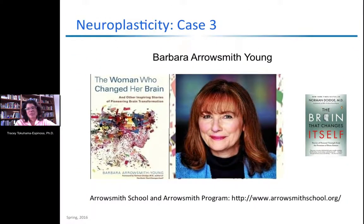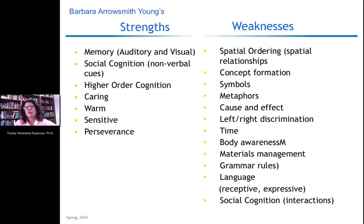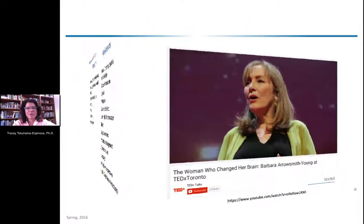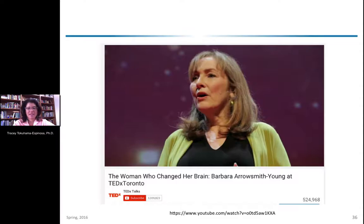In the third case, Barbara Arrowsmith-Young was born with significant learning problems and was told by professionals she would be slow for life. She had terrible deficits: she was born without the ability to tell time, discriminate right from left, understand cause and effect, or process certain symbol systems, and she had very awkward social interactions. We'll let her explain in her own words in this short video clip.